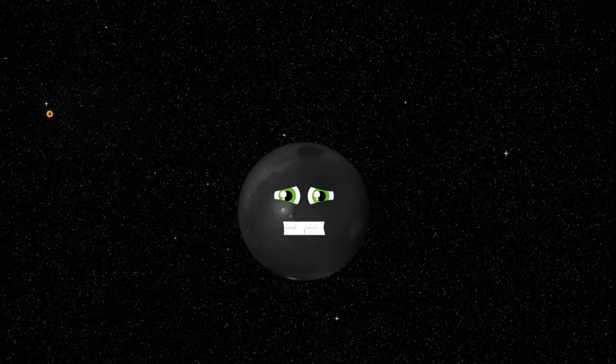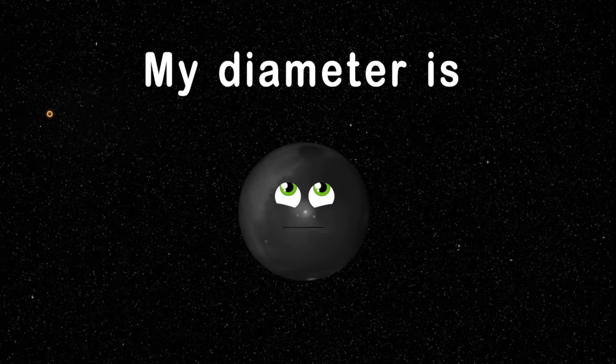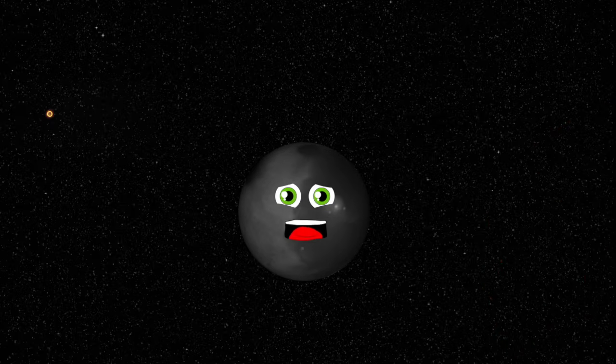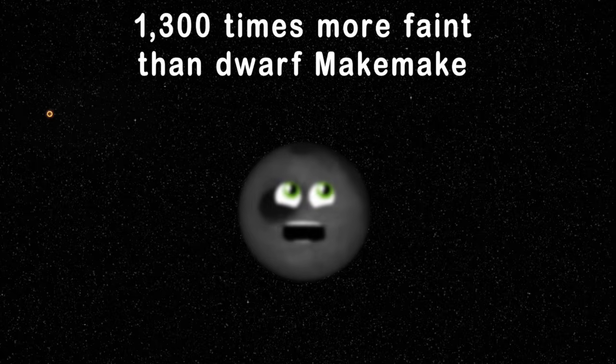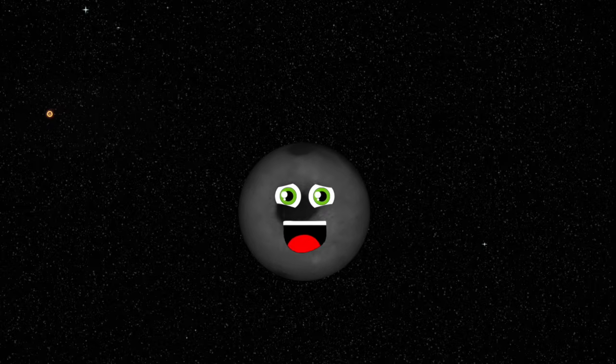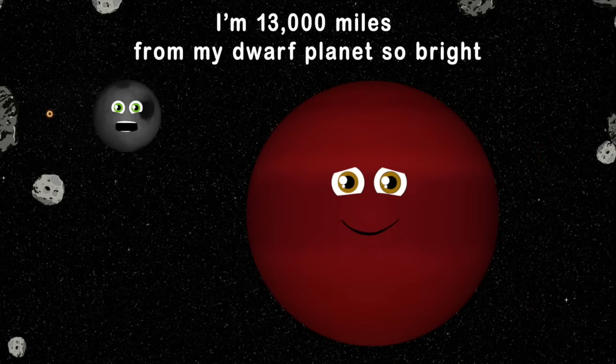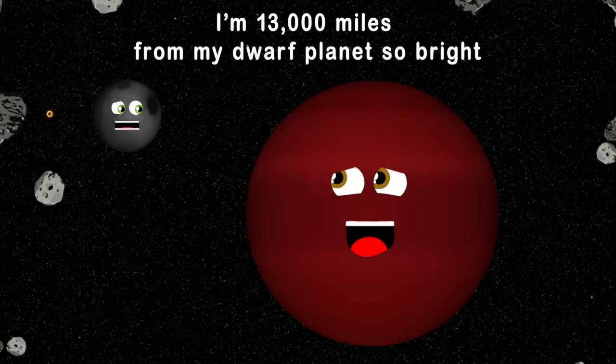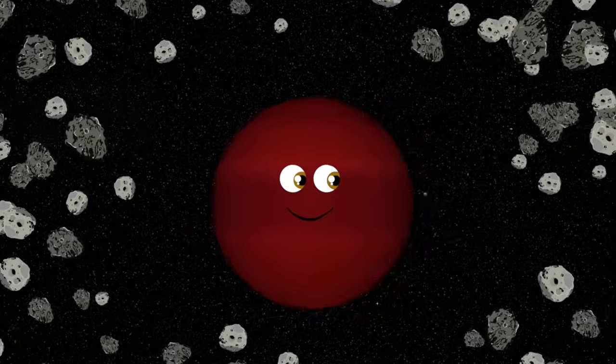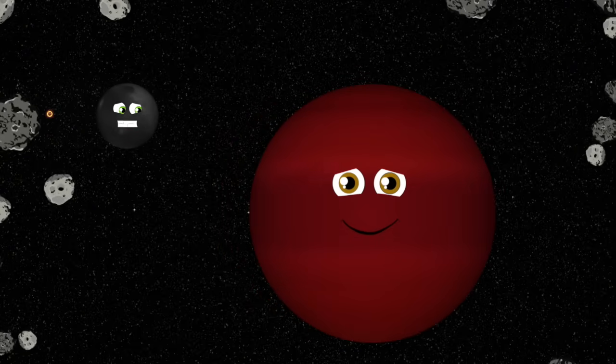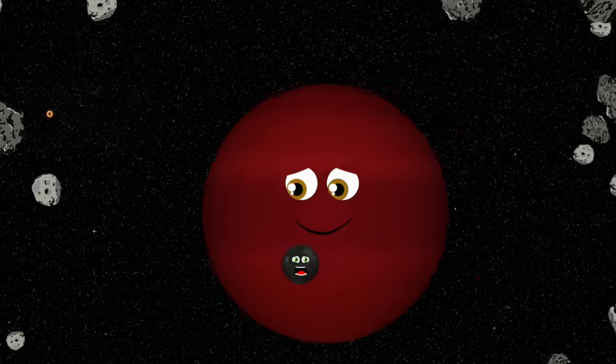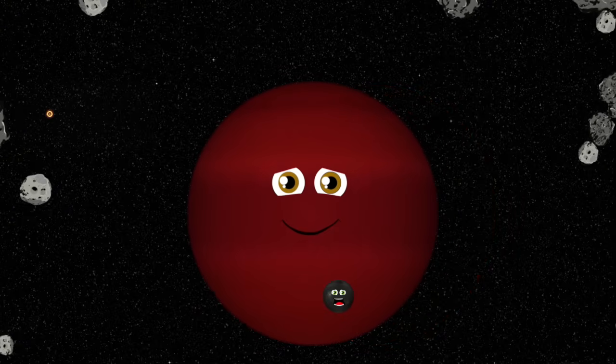It's estimated my diameter's 100 miles across. That's an estimate only from a bunch of astronomers. I'm 1300 times more faint than dwarf Maki Maki. When a telescope gets closer they will see me more clearly. I'm 13,000 miles from my dwarf planet so bright, and I'm called a moon because I'm a natural satellite. Maki Maki had what scientists thought were dark warm spots. Now they think it was me making those warm dots.